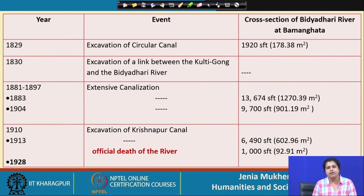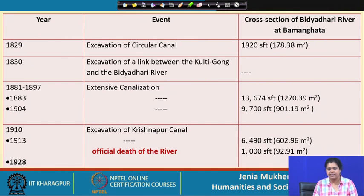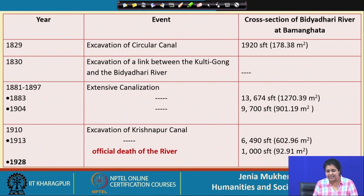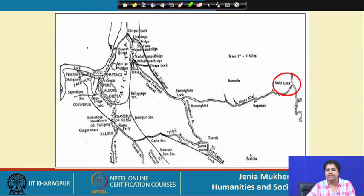Whatever the reasons may be, the fact is that the Bidhyadari was officially declared dead or defunct in 1928. This is an important event because due to the decline of the Bidhyadari river, the next question was: what would be the alternative outfall channel for this urbanizing city?